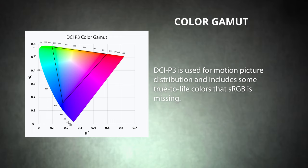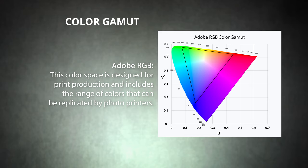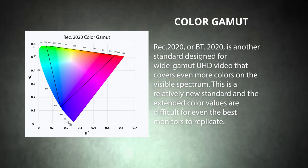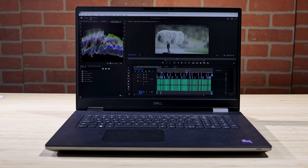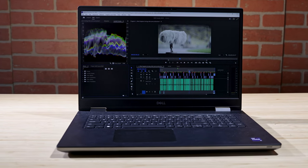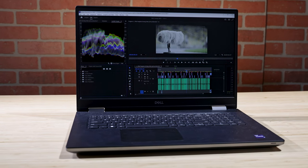DCI-P3 is used for motion picture distribution and includes some true-to-life colors that sRGB is missing. As you look at monitors, you may also encounter Adobe RGB, a color space designed for print reproduction that includes ranges of colors replicable by photo printers. REC 2020 or BT 2020 is another standard designed for wide gamut UHD video that covers even more colors on the visible spectrum — a relatively new standard whose extended color values are difficult even for the best monitors to replicate. As you shop for monitors, you'll see color capabilities notated as percentages of one of these reference color spaces. For instance, the Dell 7770 can reproduce 99% of the DCI-P3 color space, making it a good choice for filmmakers since the colors on your screen will match the colors displayed in the theater.